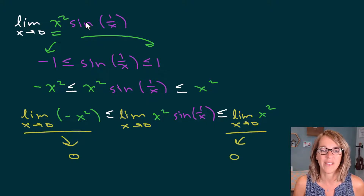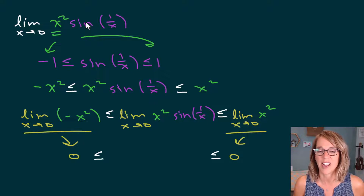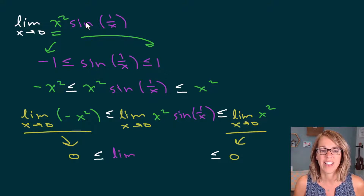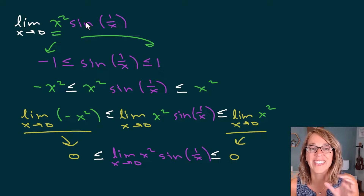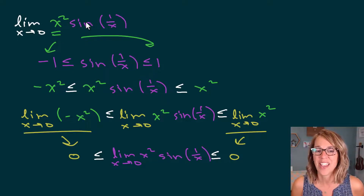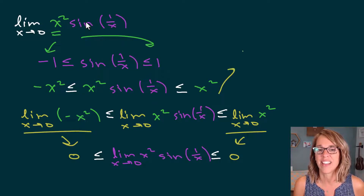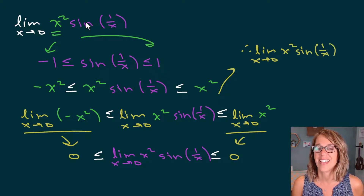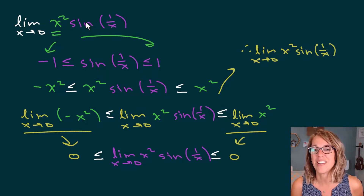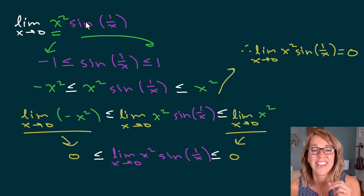The limit on the inside — the limit as x approaches zero of x squared sine of one over x — didn't have an algebraic way of finding it, but it's sandwiched in between zero. Therefore, the limit as x approaches zero of x squared sine of one over x equals zero. Since everything on the outside goes to zero, the one sandwiched in between also needs to go to zero. That's our final statement, and we've verified it with the squeeze theorem.